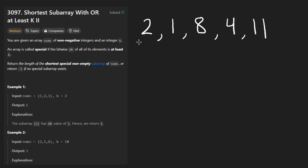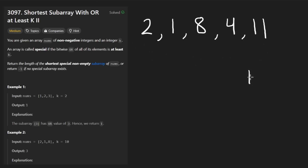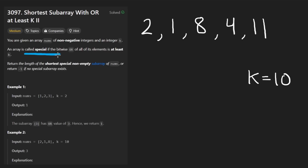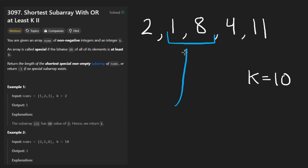Suppose we're given an input array like this one, and we're given a K value — 10 in this case, somewhat similar to the example down here. We want to return the smallest special array, meaning some continuous subarray from this one. We want to minimize the length of this special subarray and return that length — not the subarray, but the length.